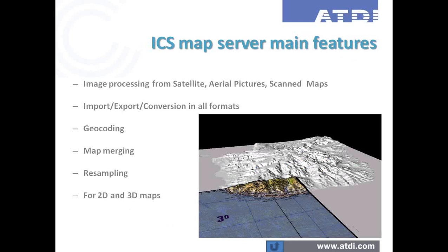ICS-MapServer allows the processing of images whatever the source — satellite, aerial picture, scan maps, and so on. It does allow the import, export, and conversion in all formats available in the market. This means that customers considering acquiring ICS-Telecom who already have cartographic databases have the guarantee that we will be able to convert their database for use with ICS-Telecom. Alternatively, ICS-MapServer can be used to extract medium-resolution cartographic databases from our servers, and ATDI proposes a wide range of cartographic databases in terms of resolution and vintage for any region or specific area in the world.